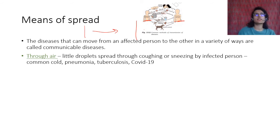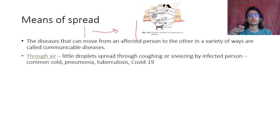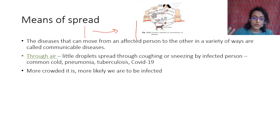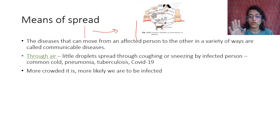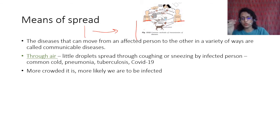You must have seen that there is always a wave of common cold — if somebody in your class gets a cold, people around that person also get it. This is a seasonal wave. It happens because of coughing and sneezing by the infected person. The more crowded it is, the more likely you are to get infected. That is why social distancing was recommended for COVID, and this applies to all diseases that spread through air.